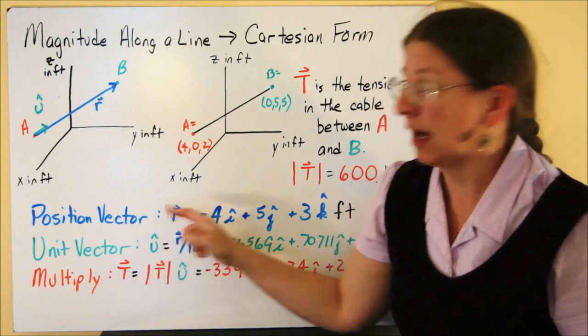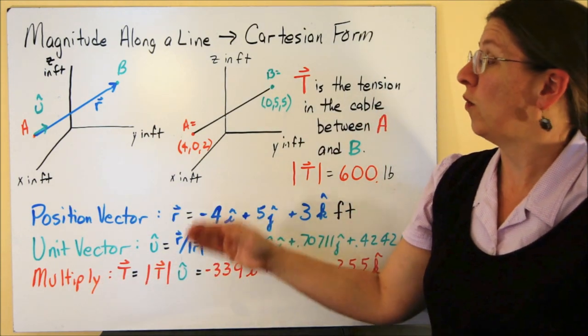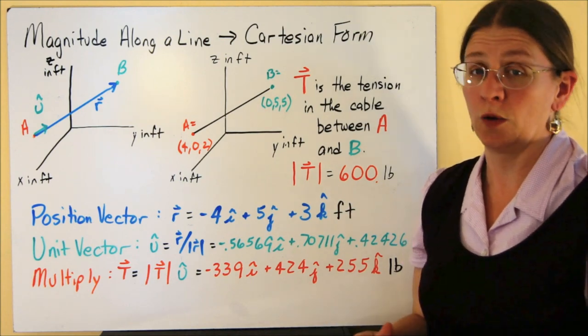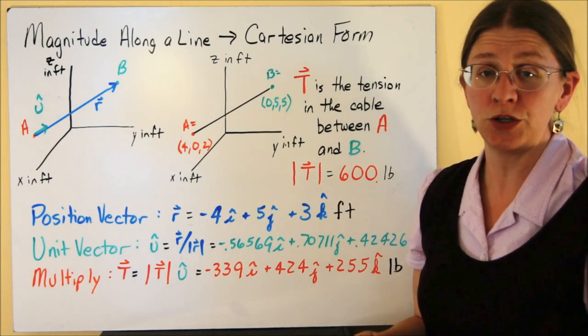You'll hear me say this a lot, position vector, unit vector, multiply. That's how you go from the most common way of denoting a force in 3D to working with it in its most common way in Cartesian form.